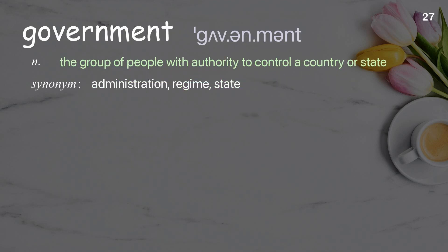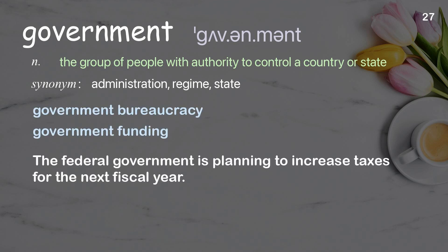Government: the group of people with authority to control a country or state. Example: the federal government is planning to increase taxes for the next fiscal year.